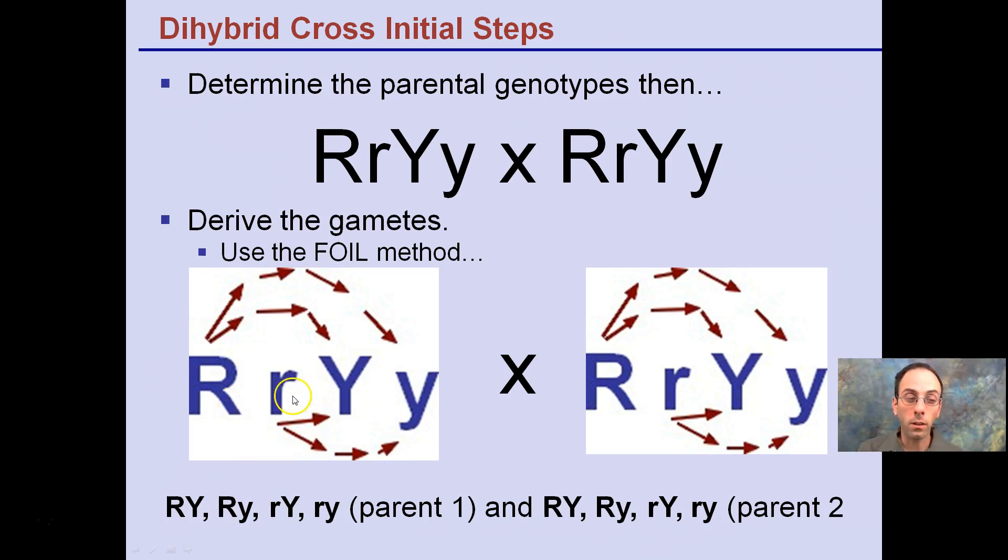The first parent then we need to also recognize the other allele, in this case the recessive, the little r. Little r goes to big Y, and then little r goes to little y. This is parent 1.